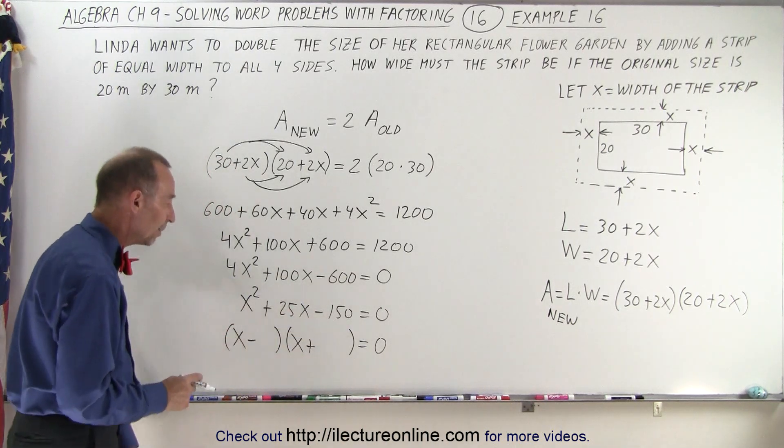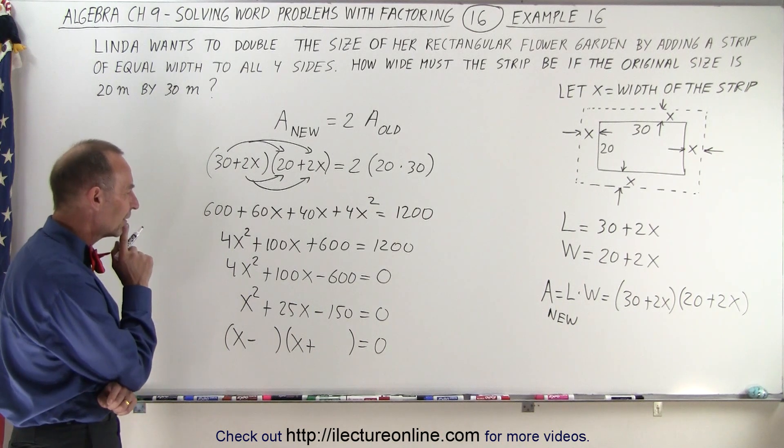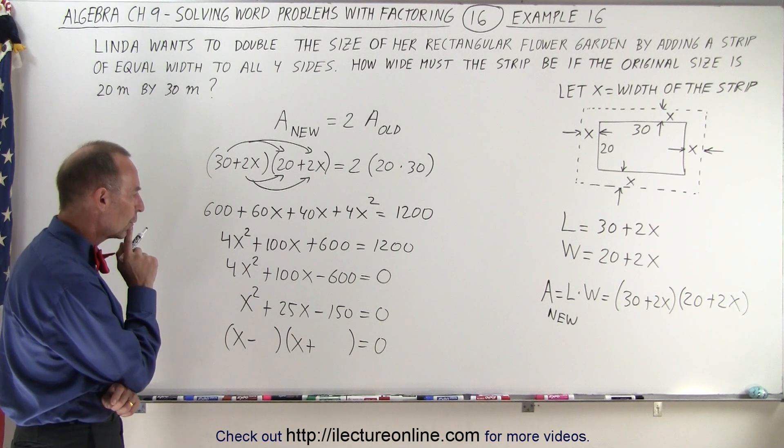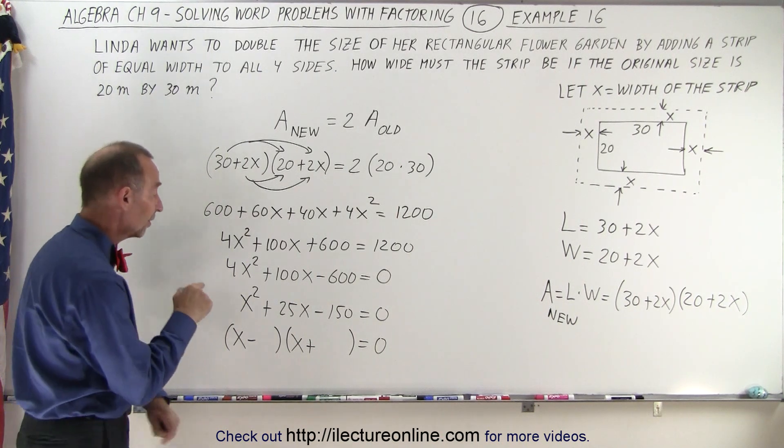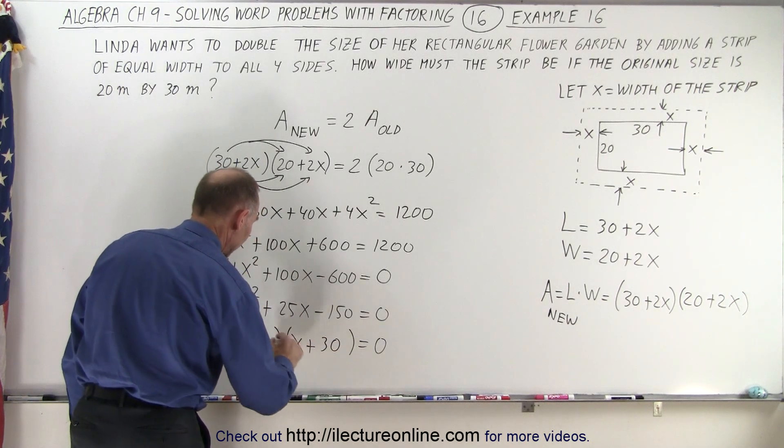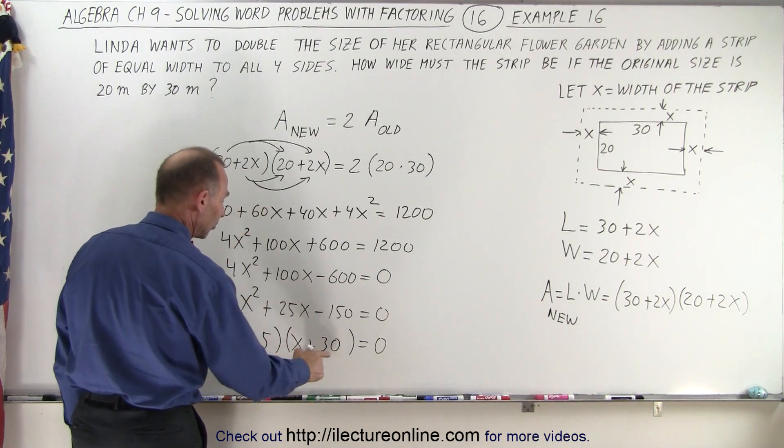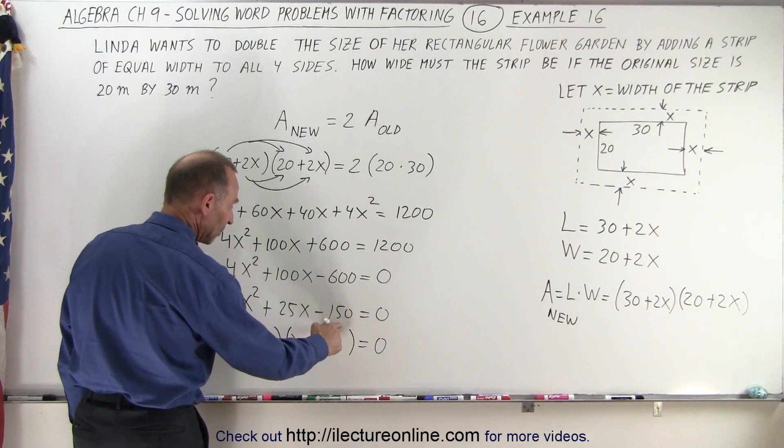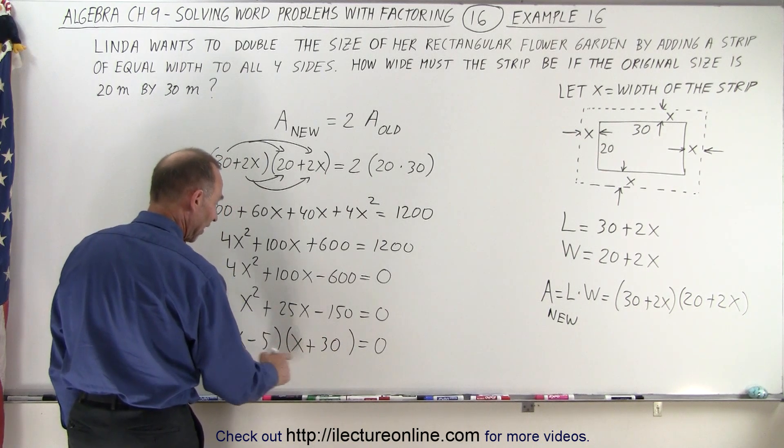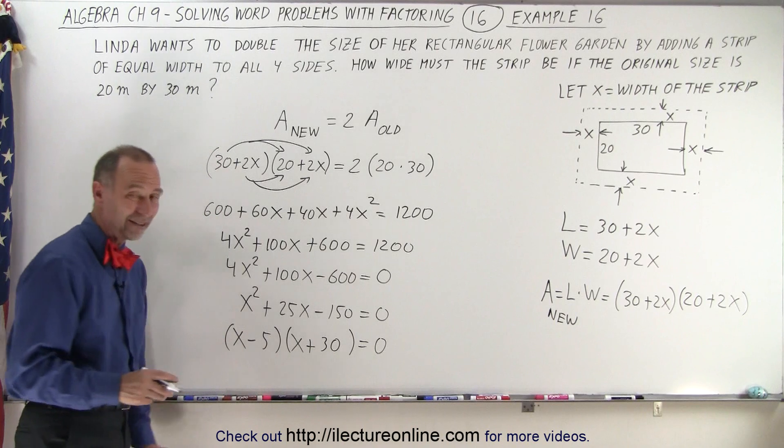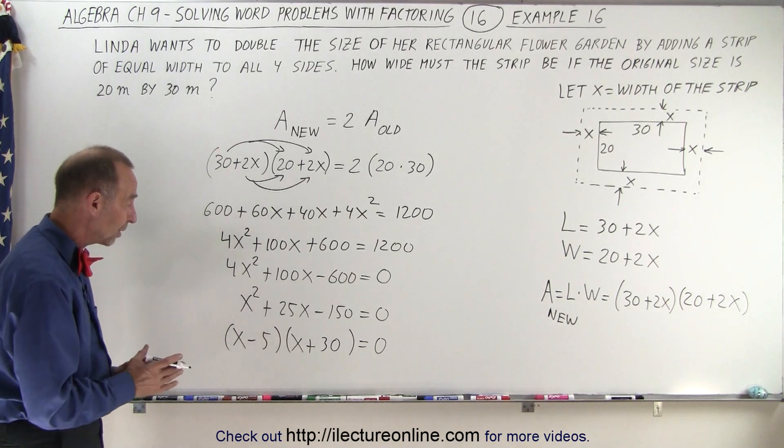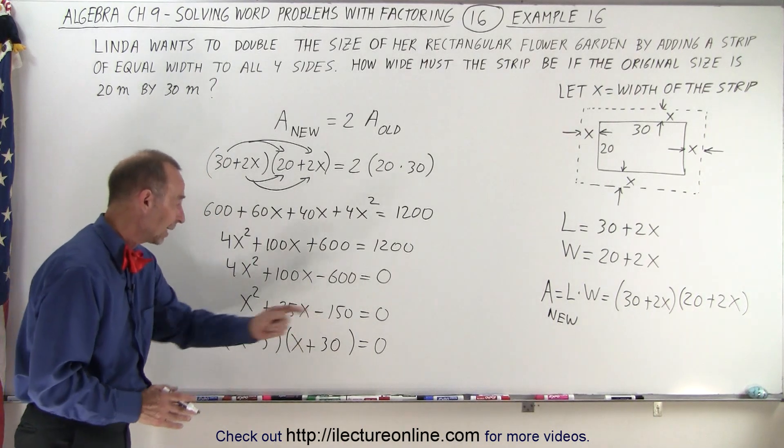So 30 times 5, if I make this a plus 30 and a negative 5, 5 times 30 or negative 5 times 30 gives me minus 150. And negative 5 plus 30 gives me positive 25. I knew that the numbers had to differ by 25 and that the product had to be negative 150.